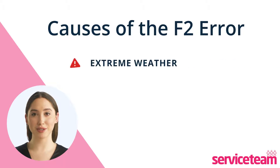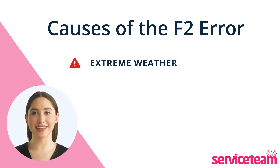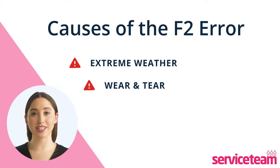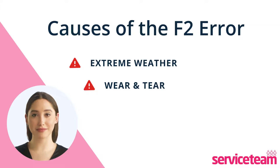Extreme weather can also contribute to the F2 fault in Wiesmann boilers. Freezing of the condensate pipe during cold weather can cause the system to fail. Debris accumulation and worn-out parts may result in issues like flame loss or overheating, triggering the F2 fault code.